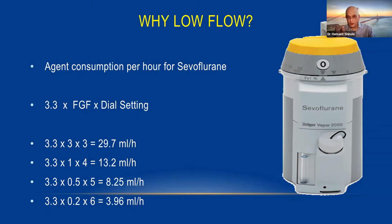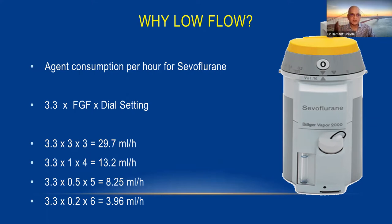For a five-hour case: at 3 L/min flow with dial 3 — 150 ml total; at 1 L/min with dial 4 — 65 ml; at lower flows with higher dial — 40 ml; at 0.2 L/min (200 ml/min) with dial 6 — just 20 ml over five hours. One anesthetist uses 150 ml, I use 20 ml — that is the cost saving this technique offers.